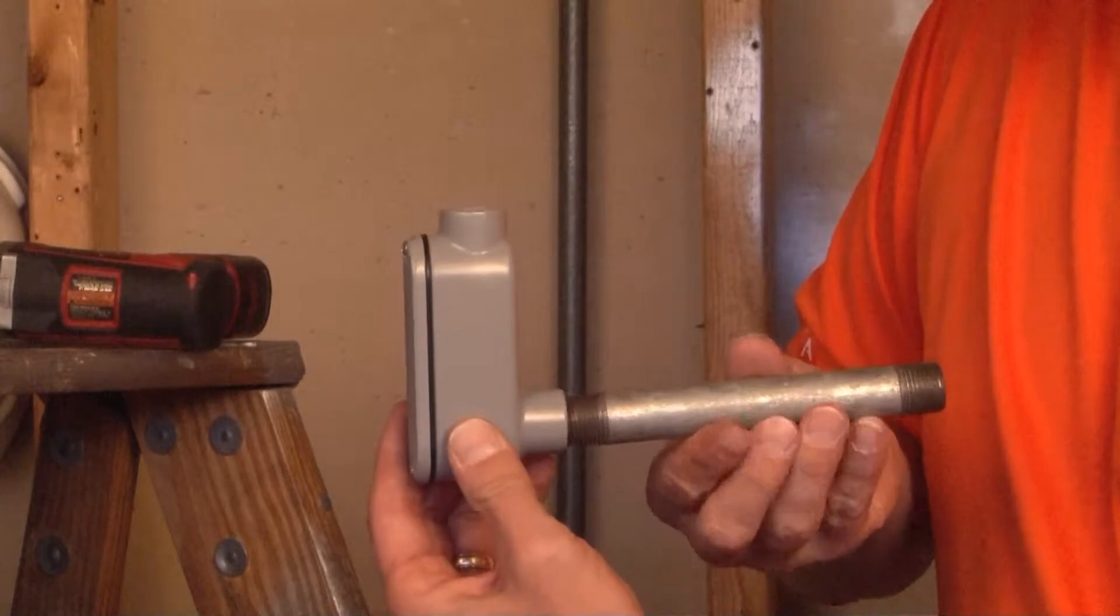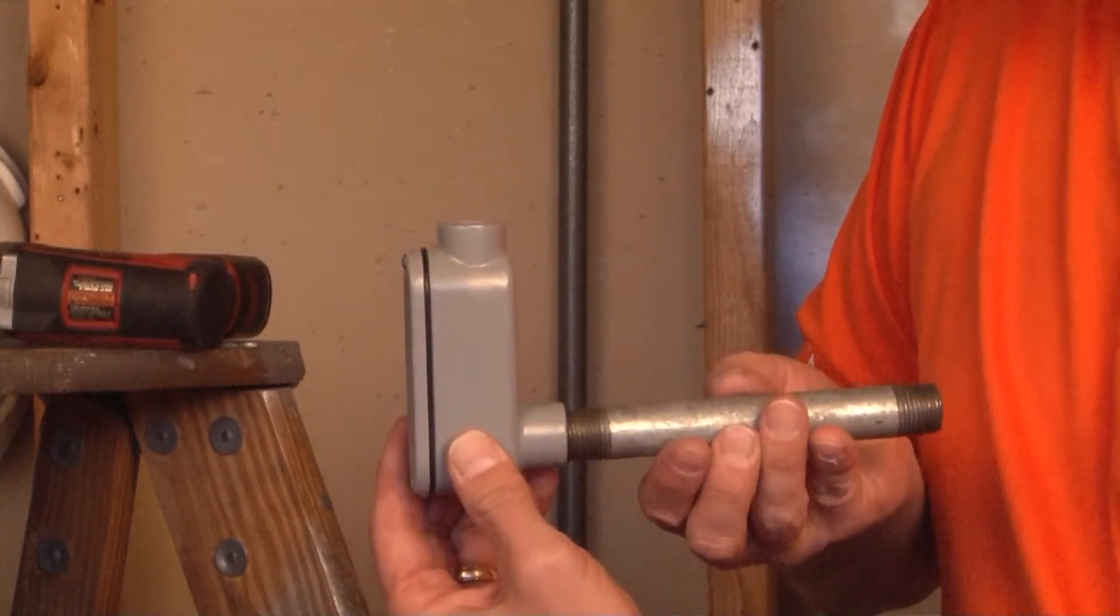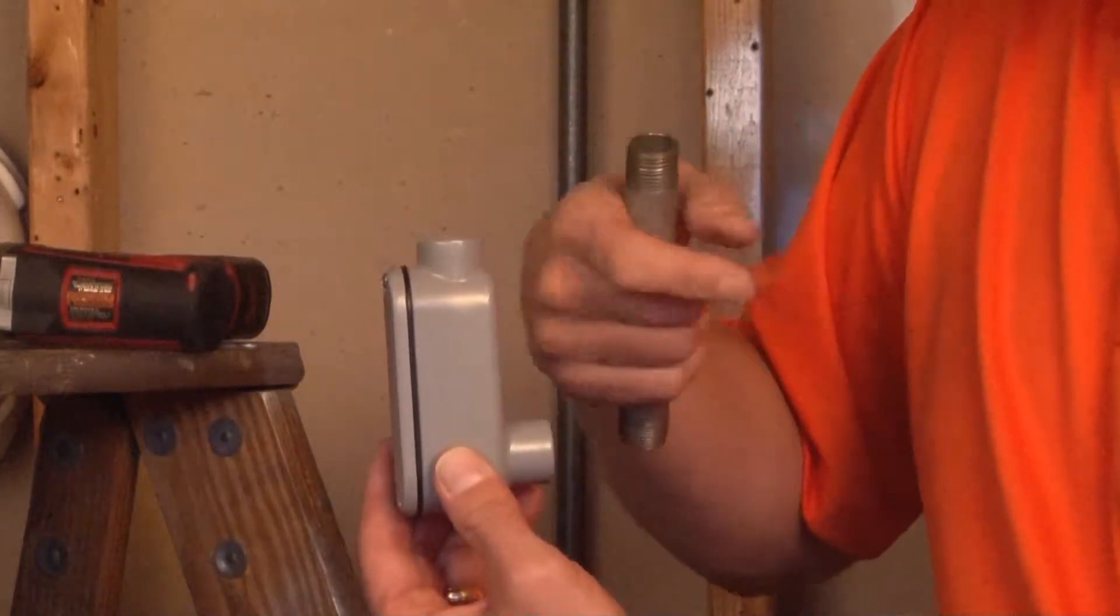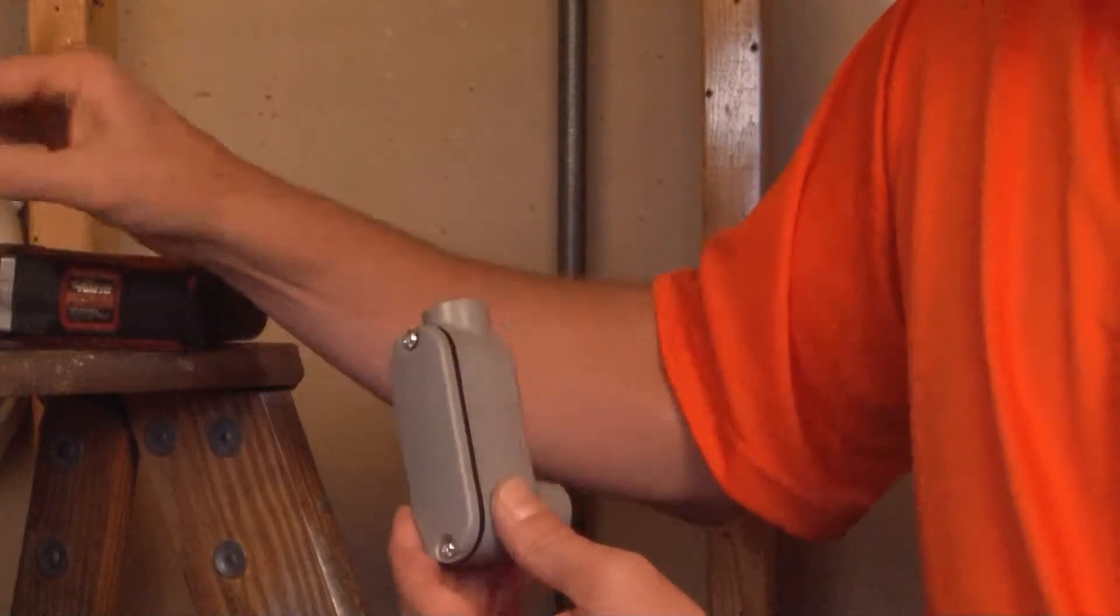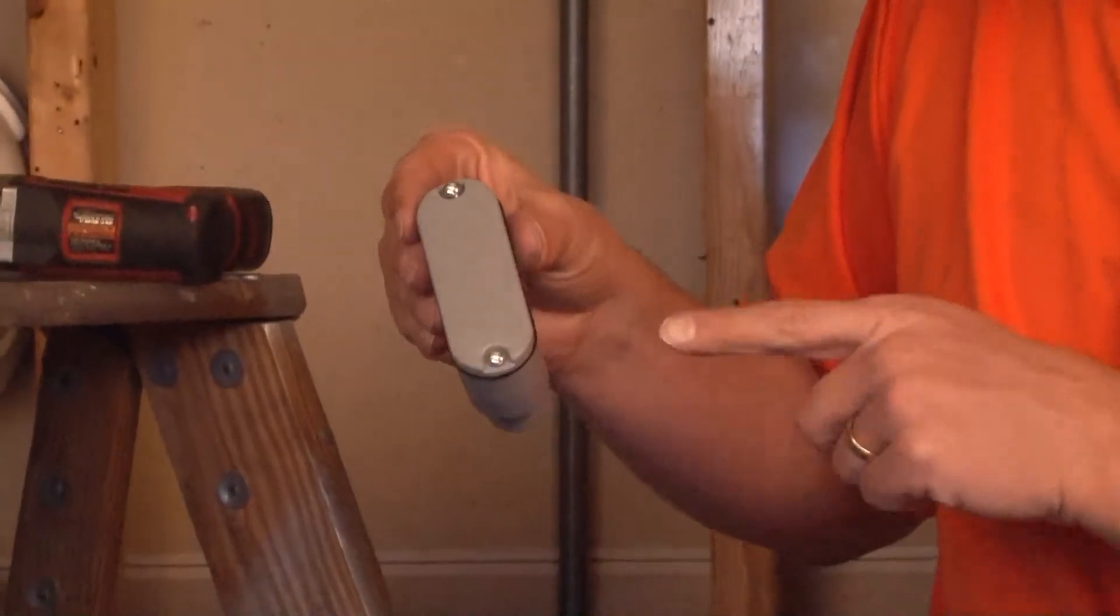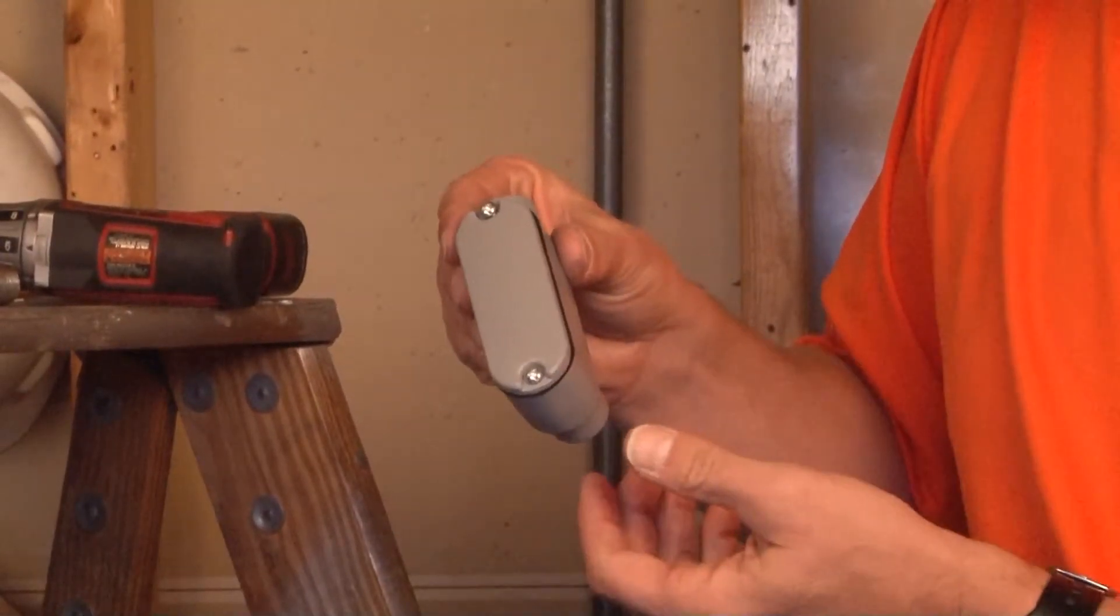By simply threading the rigid conduit into either of the hubs, you pull the wire through and make the 90-degree turn. This unit comes complete with a cover and neoprene gasket.